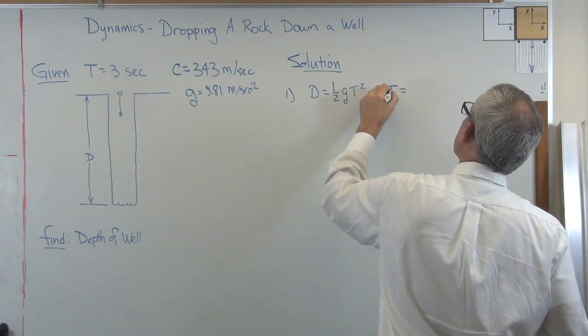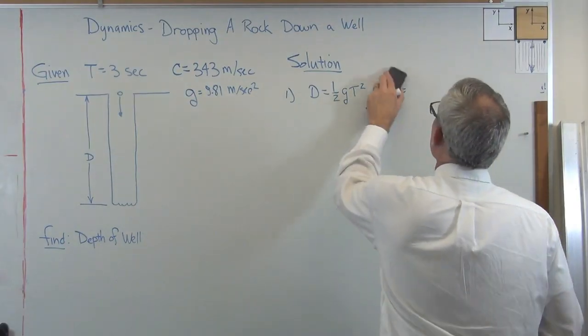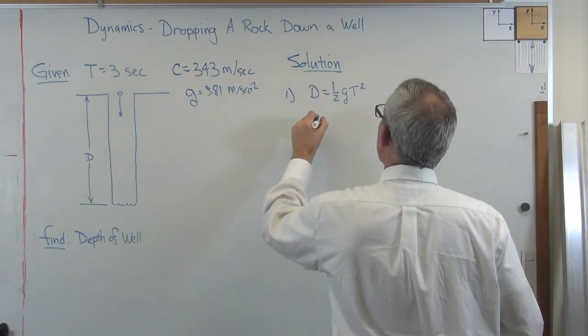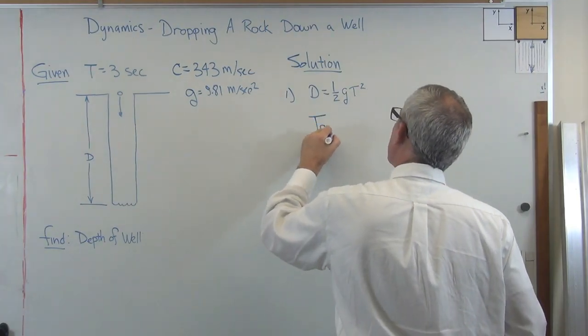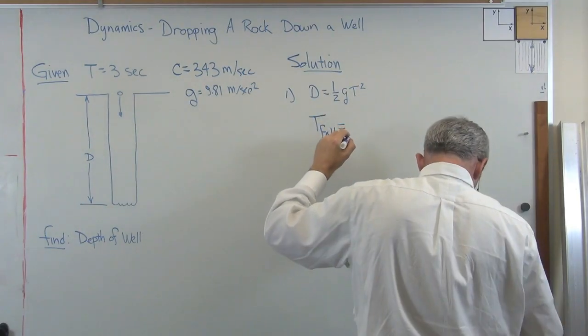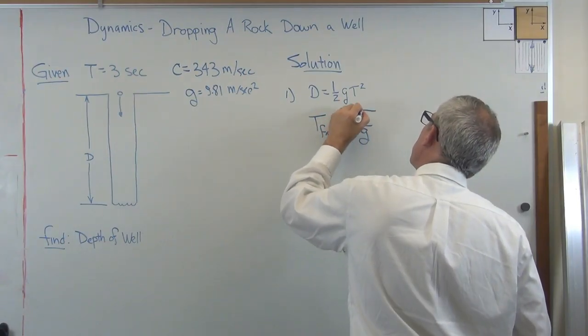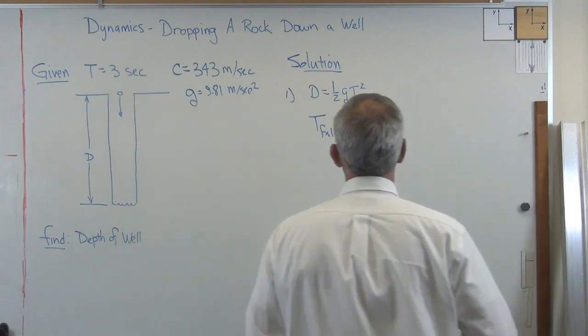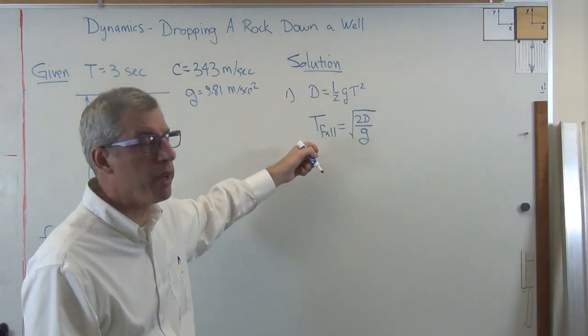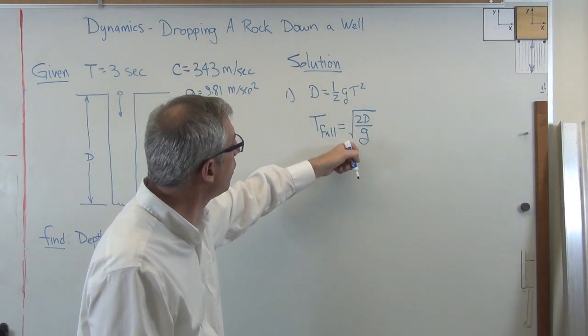Time, this is the time of, let's call this the time in falling, so T fall equals, let's see, square root of 2D over g. Okay, so there's the expression for how long it takes the rock to fall and hit the water in terms of D. Now we don't know what D is yet.